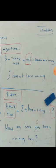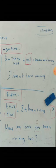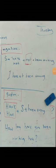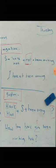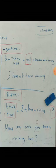باختصار، Present Perfect Continuous تعني أن الفعل بدأ في الماضي ولم ينتهِ حتى الآن — started at the past and hasn't finished yet. إن شاء الله غداً سنحل تمارين الكتاب. من فضلكم انسخوا هذا الجدول والدرس على دفاتركم. يعطيكم ألف عافية.